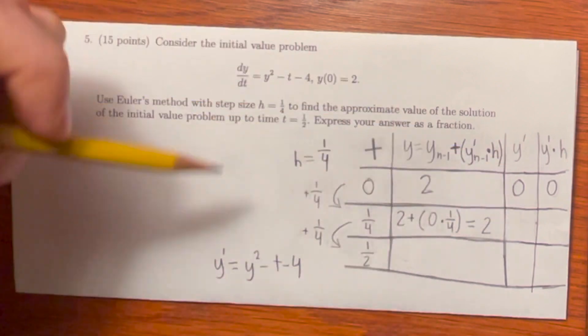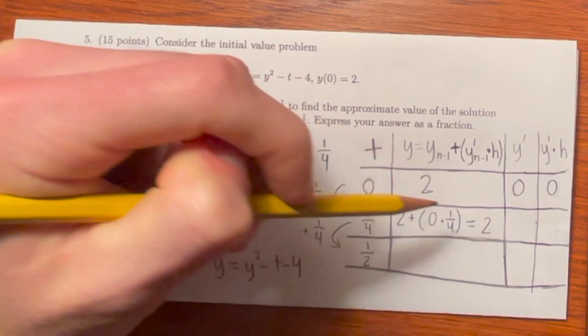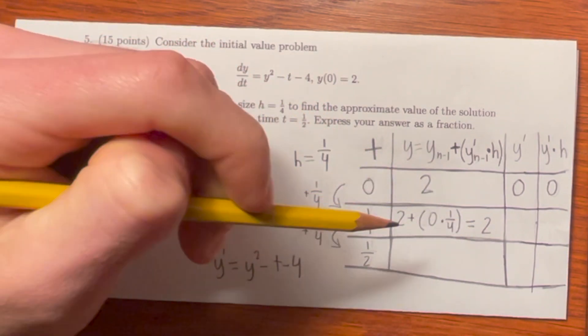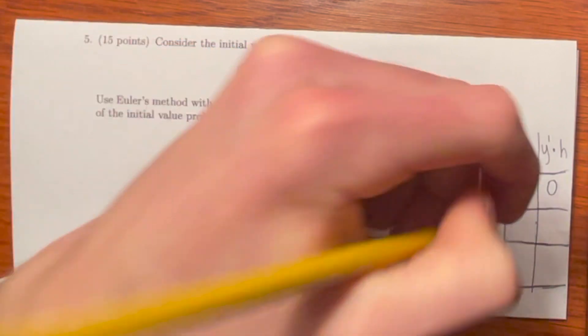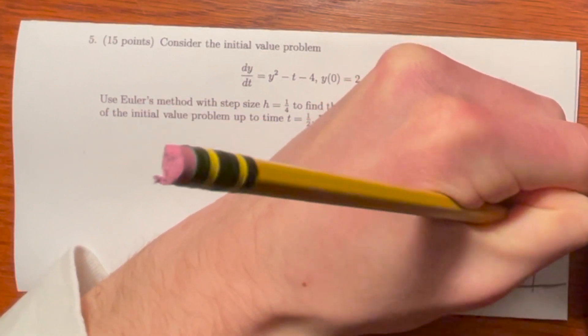y prime, using the equation that we're given in this problem, is y squared, which is 2 squared, minus t, which is 1 fourth, minus 4. y prime becomes negative 1 fourth. And negative 1 fourth times h, which is 1 fourth, becomes negative 1 over 16.